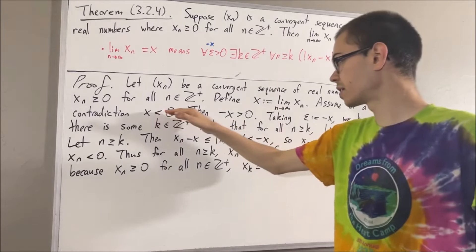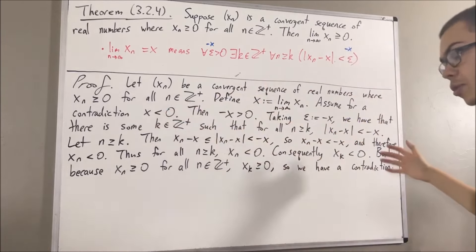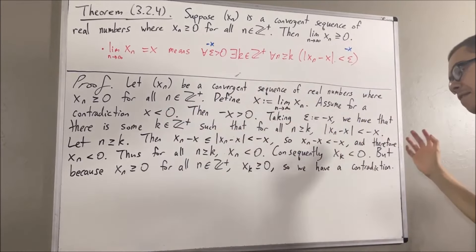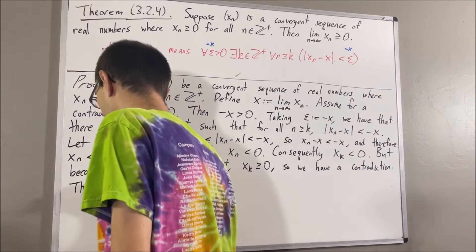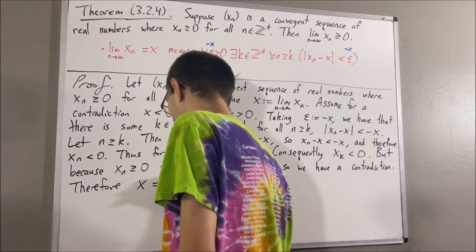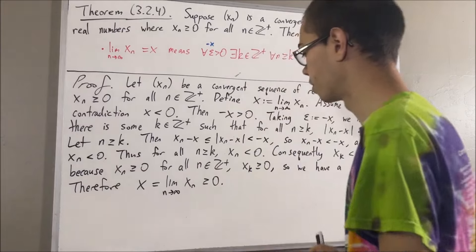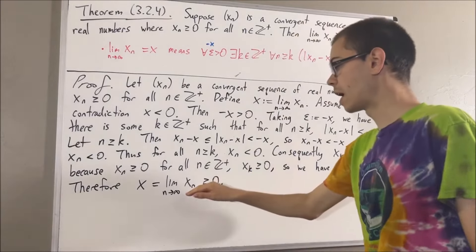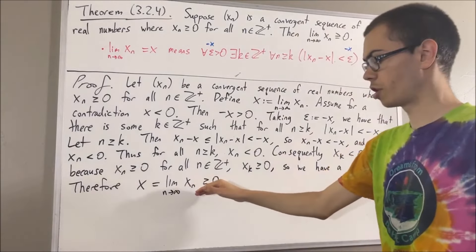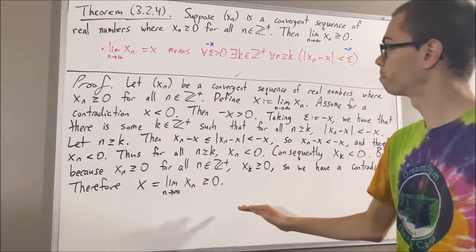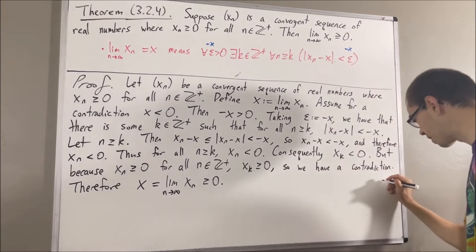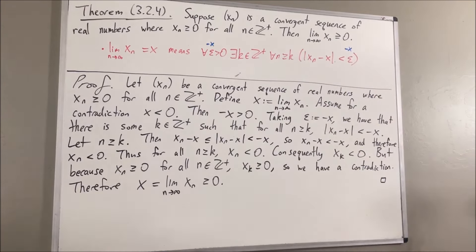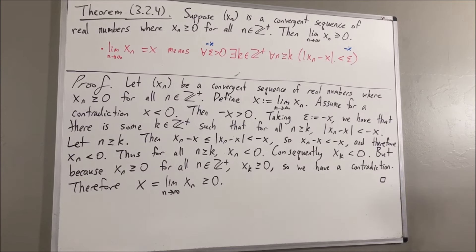Our assumption that x is less than zero led to a contradiction, so we must instead have that x is greater than or equal to zero. So xn converges to a value that is greater than or equal to zero. And that's exactly what we wanted to prove, so this completes the proof.